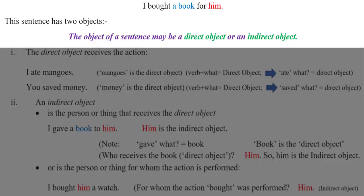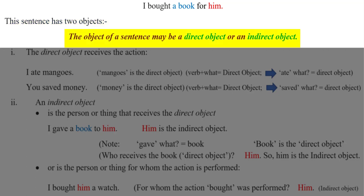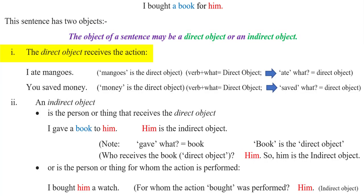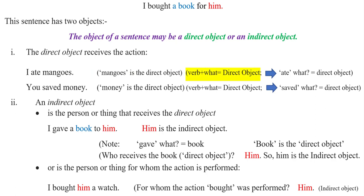Consider this sentence: 'I bought a book for him.' This sentence contains two objects. The object of a sentence may be a direct object or an indirect object. The direct object receives the action. 'I ate mangoes.' Here, mangoes is the direct object. In order to recognize the direct object, we ask: verb plus what equals direct object. The verb is ate — I ate what? Mangoes. So mangoes is the direct object. 'You saved money.' Saved what? Money. So money is the direct object.